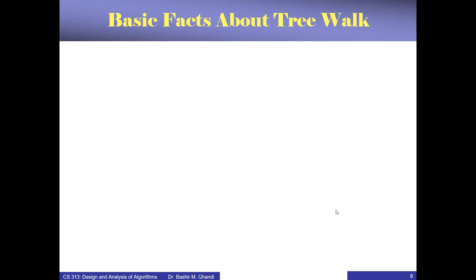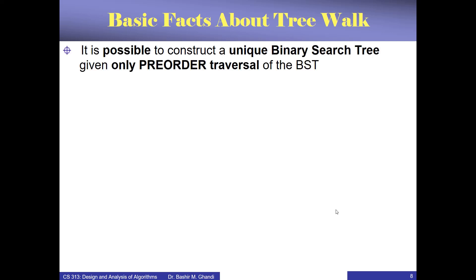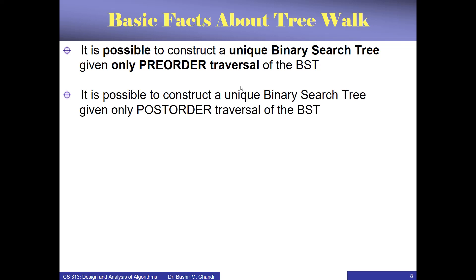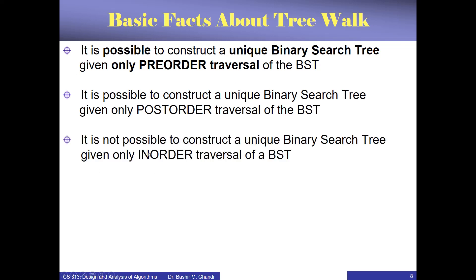Some basic facts about binary search trees: it is possible to construct a unique binary search tree if given only the pre-order traversal of the tree. From the pre-order list alone, you can reconstruct the tree. The same is true for post-order. However, if you are given only the in-order traversal, unfortunately you cannot reconstruct the tree. This is true only for pre-order and post-order.